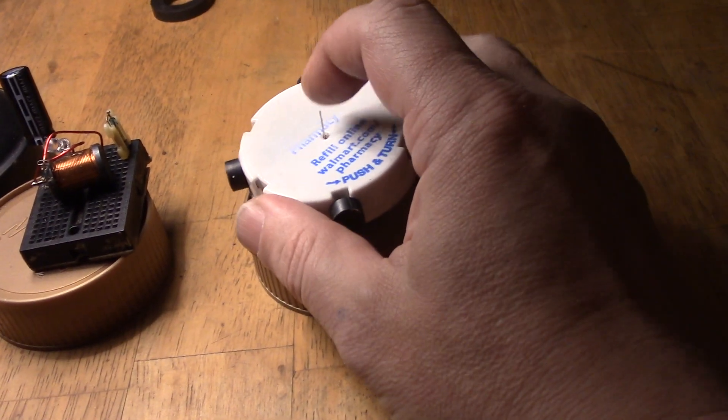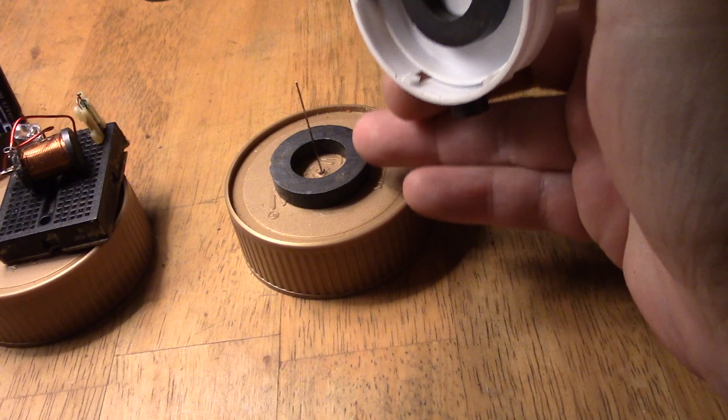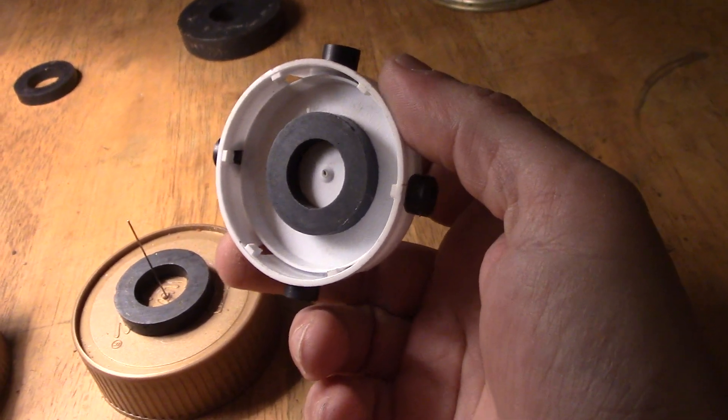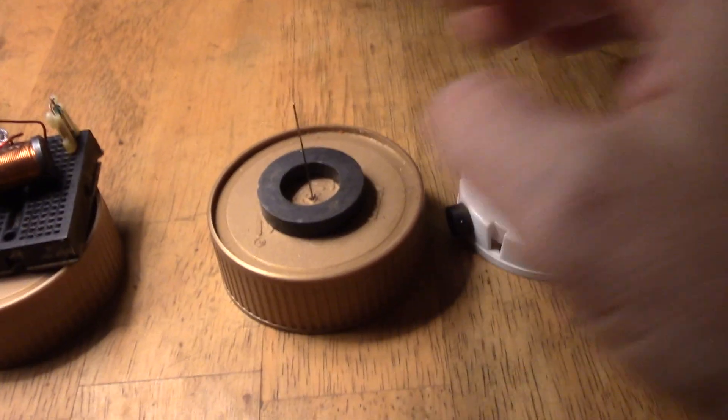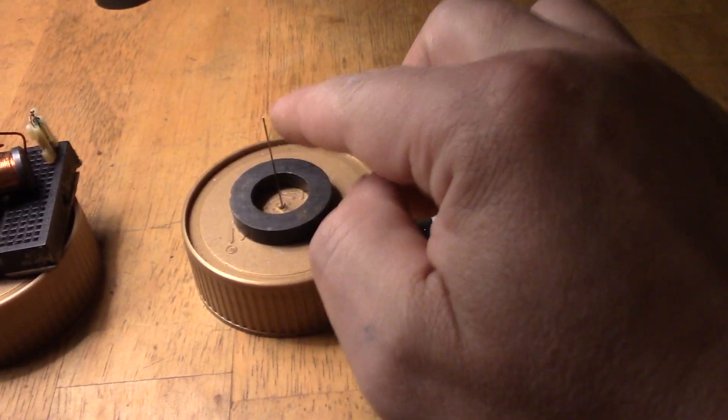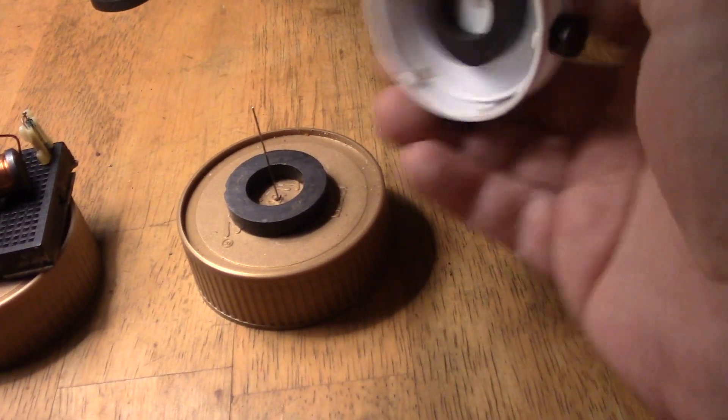I'll stop it, pull the top off, and you can see what I've done. We've got one of those ring types at the bottom and another one underneath the lid. Then I've got a pin, a needle, going through the very middle of it, and everything just sits together like that.